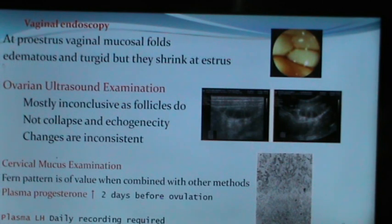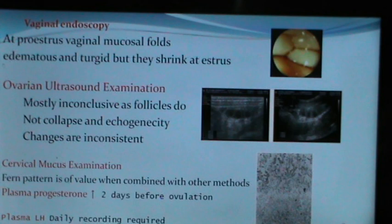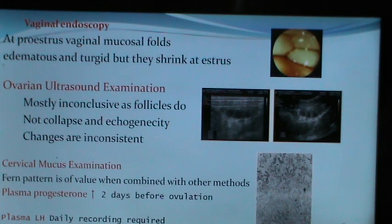Cervical mucus examination and fern pattern are of value when combined with other methods such as cytology. A good approach is evaluation of plasma progesterone, which increases two days before ovulation — an increase suggests the owner should breed their bitch. Plasma luteinizing hormone assay can also be performed, but daily recording is required and becomes cumbersome in a clinical setting.